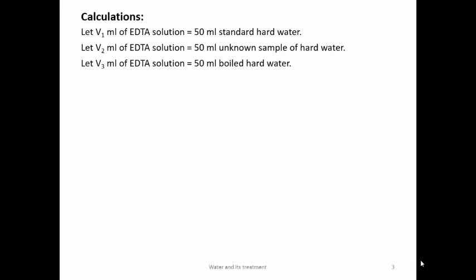For the calculation: 50 mL of standard hard water corresponds to V₁ mL of EDTA; 50 mL of sample hard water corresponds to V₂ mL of EDTA; and 50 mL of boiled hard water corresponds to V₃ mL of EDTA. In all three titrations, buffer solution and EBT were added, giving three readings: V₁, V₂, and V₃ mL.